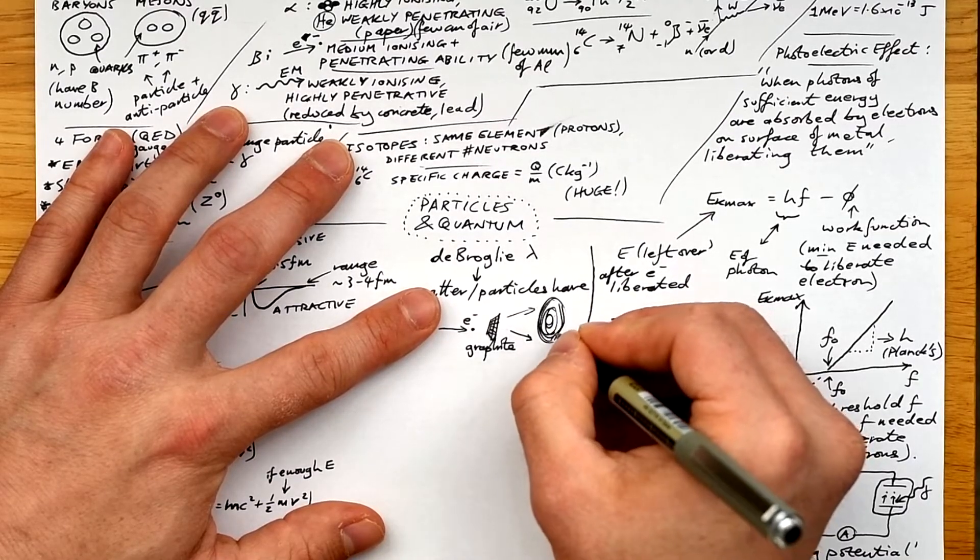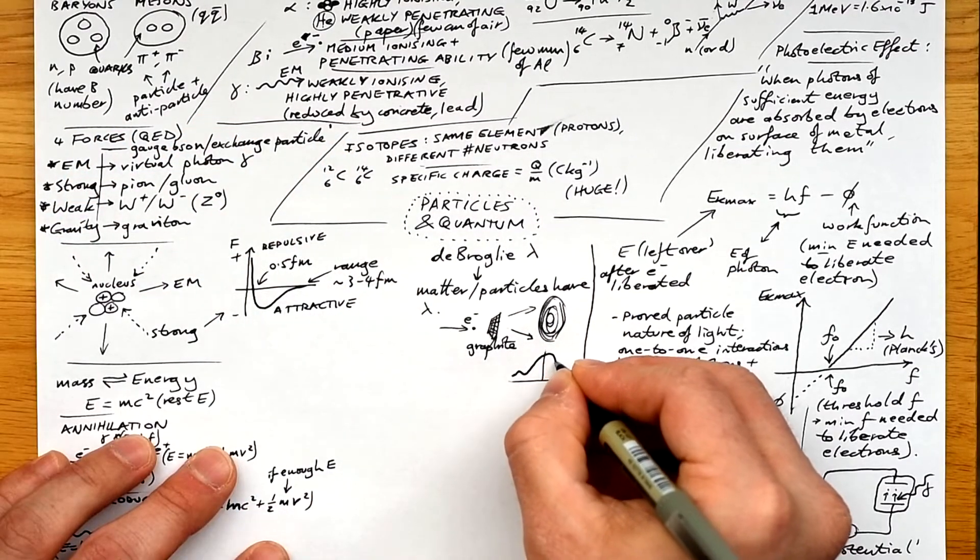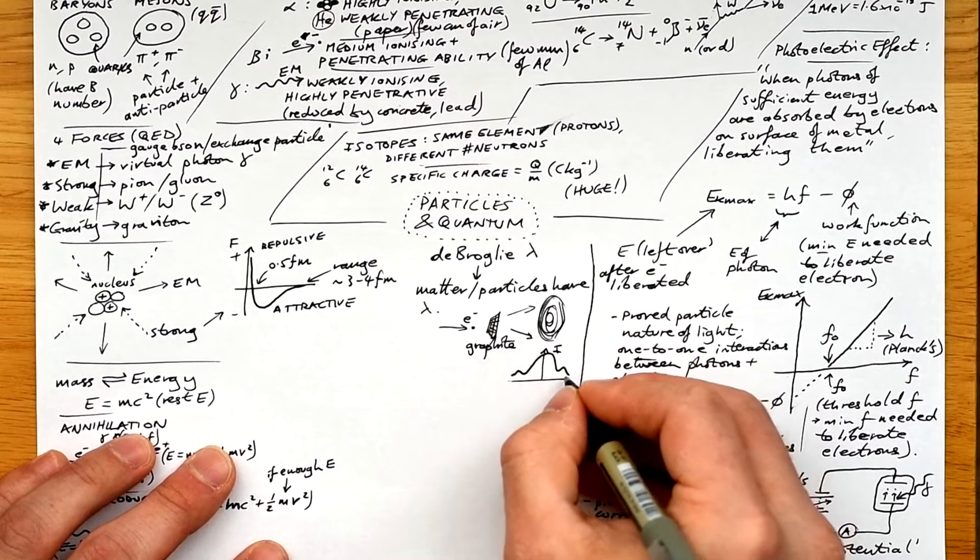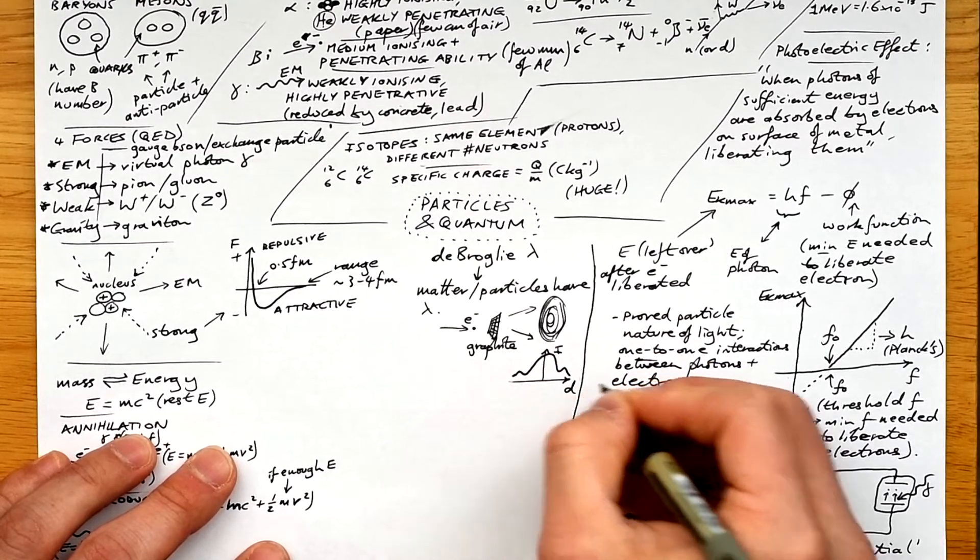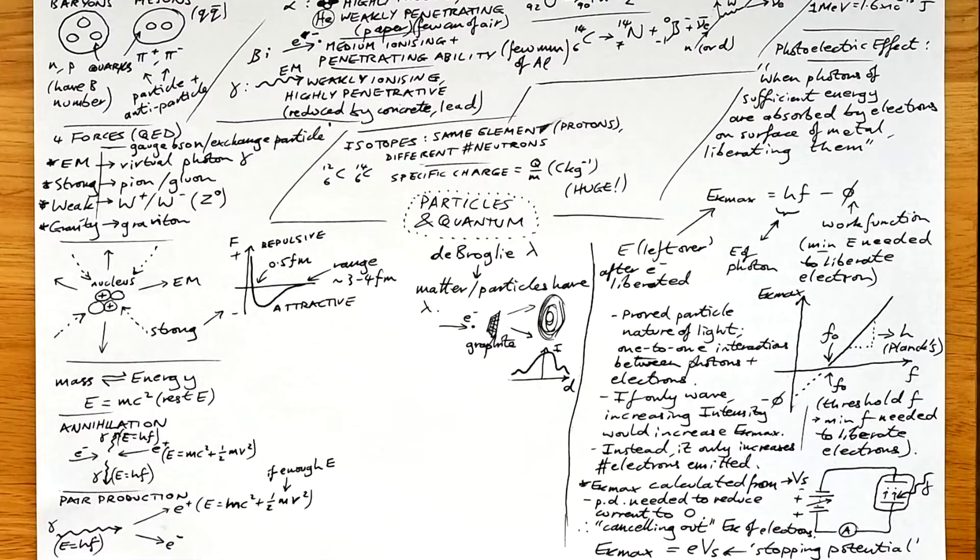And that's because the electrons are diffracting around the carbon atoms, and producing maxima and minima on the screen, just like light. Here's the pattern for it. Note that the intensity doesn't really go to zero.